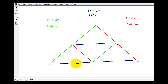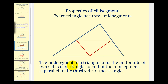Let's go ahead and formalize our observations. First, the mid-segment of a triangle joins the midpoints of two sides of a triangle, such that the mid-segment is parallel to the third side of the triangle. So this mid-segment here is parallel to this side of the triangle here. This mid-segment here is parallel to this side of the triangle.